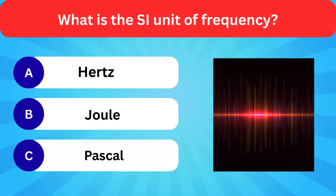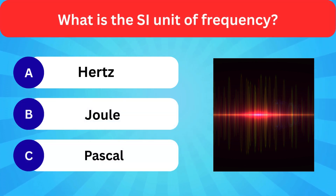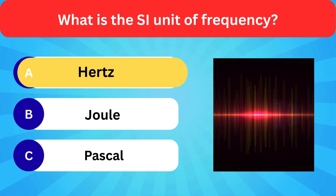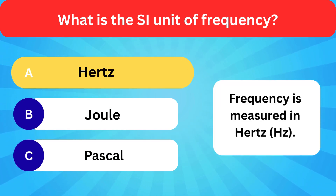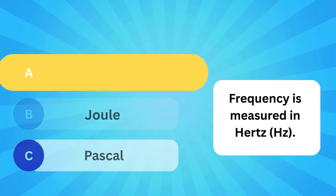What is the SI unit of frequency? Options: Hertz, Joule, Pascal. Correct answer is Hertz. Frequency is measured in Hertz.